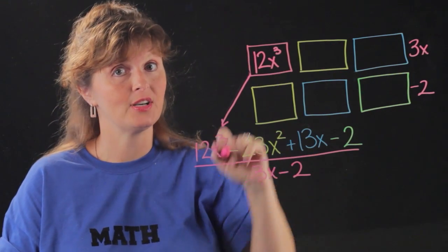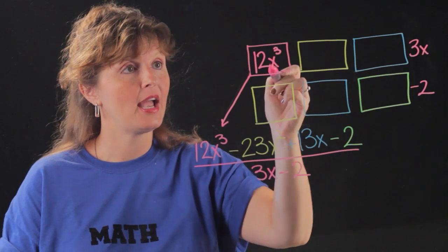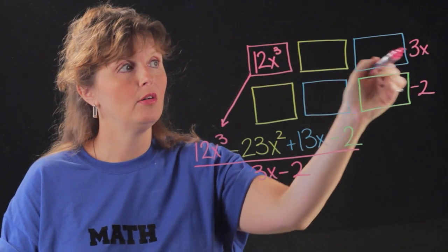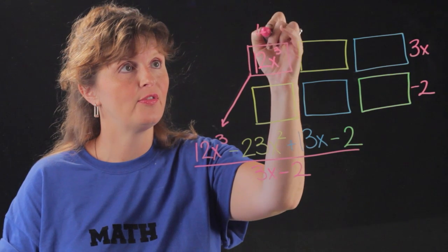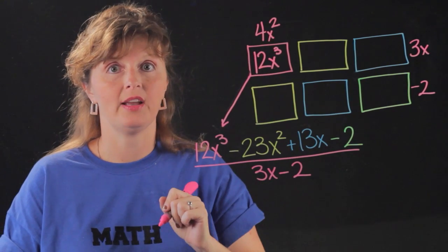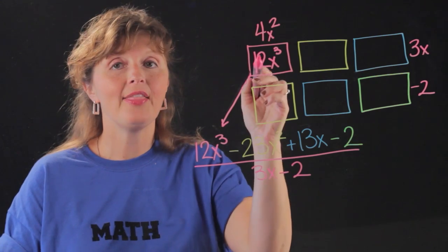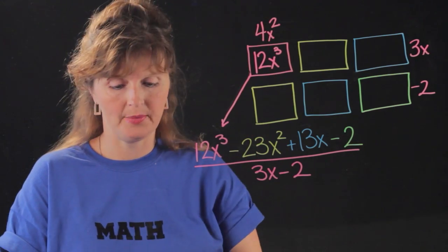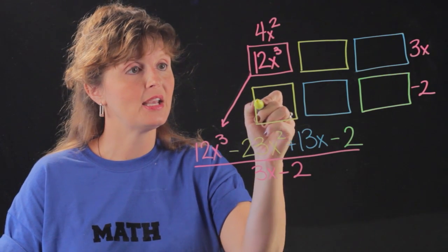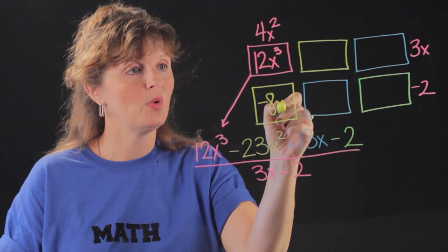So here's the answer in a sense and I need 3x times what gives me 12x³? Well 3x times 4x² gives me 12x³.